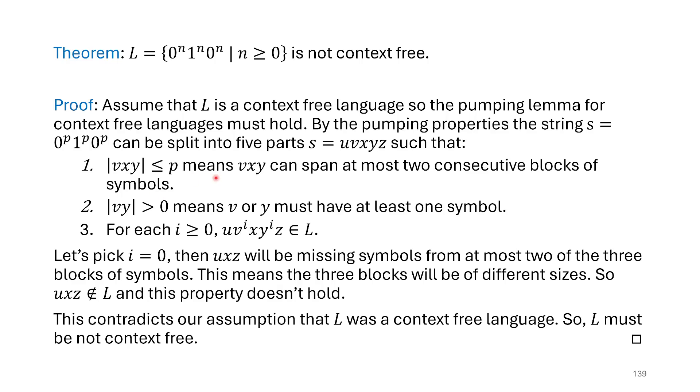We noticed that when we split it up, our pumpable parts, V and Y, can only occur in at most two of the blocks. That means when we pumped down, that's what we chose to do, we ended up with maybe one block or maybe two blocks that have fewer symbols in it than the third block. And that put them out of equality. And that's enough to show that our string is not in our language. And so we conclude that this particular language is not context-free. This is just our first example. In our next video, we're going to do maybe a couple more examples of non-context-free languages and showing how we can make these kinds of arguments. So thanks a lot for watching and we'll see you in that next video.